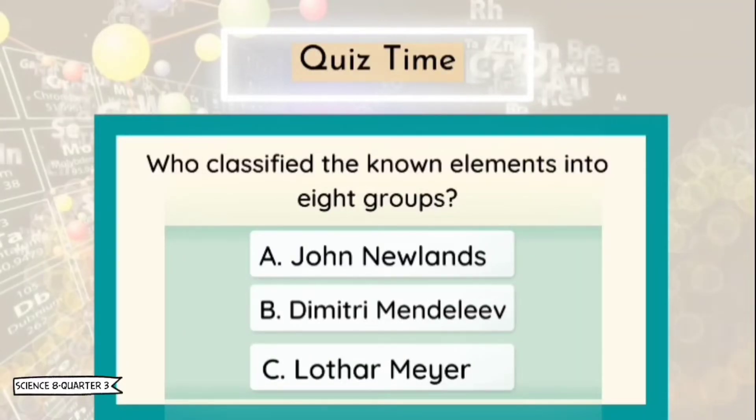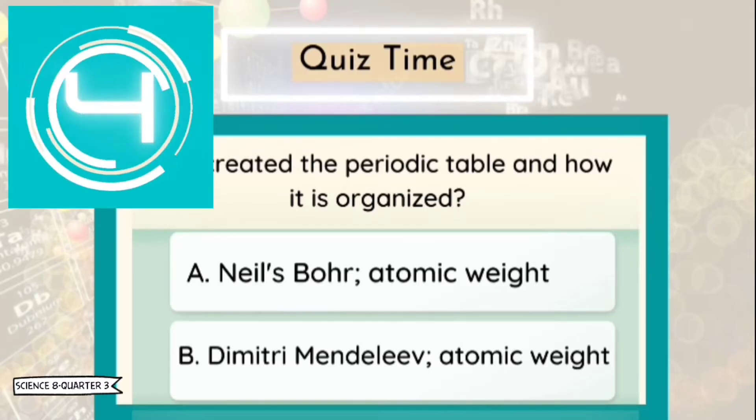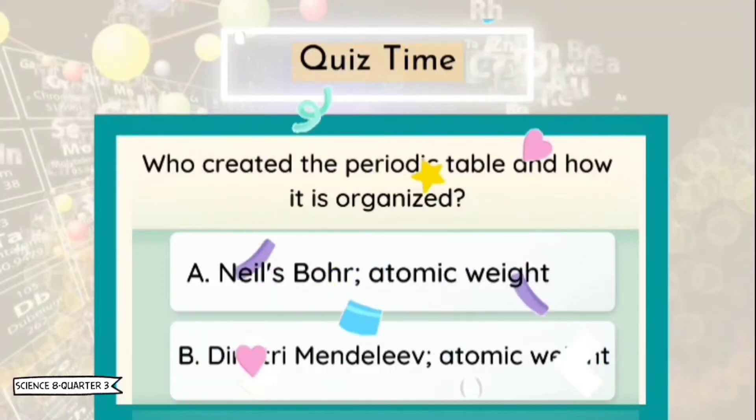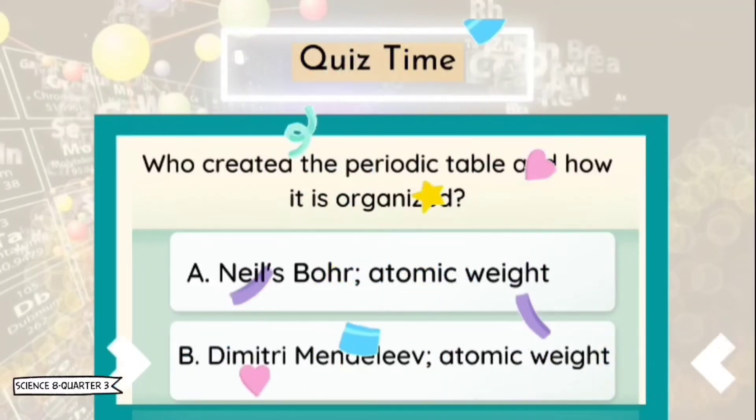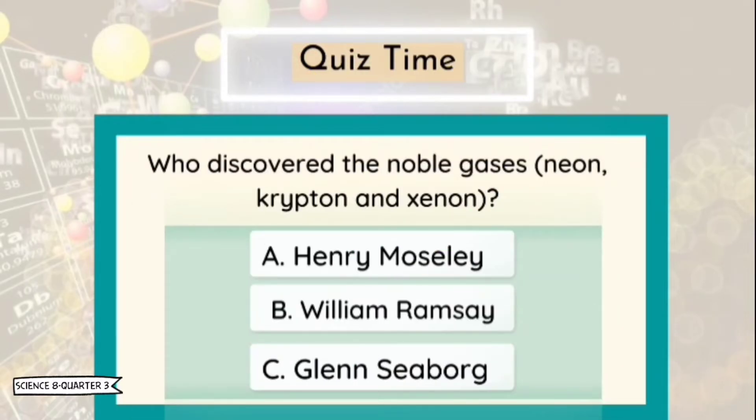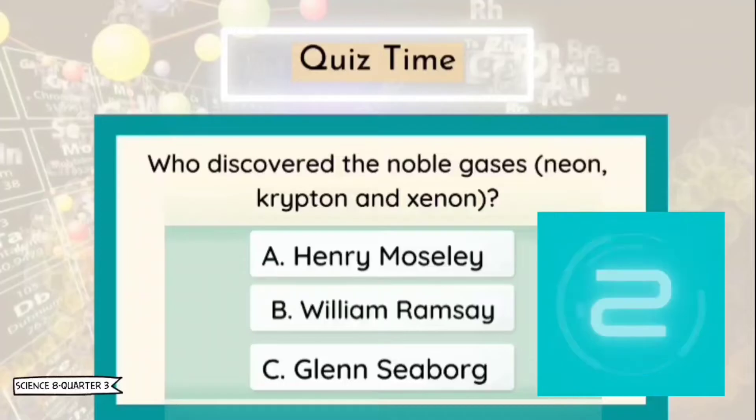Correct! John Newlands. Question 2: Who created the periodic table and how it is organized? Good job! Dmitri Mendeleev by increasing atomic mass. Lastly, question number 3: Who discovered the noble gases neon, krypton, and xenon? Very good! William Ramsay.